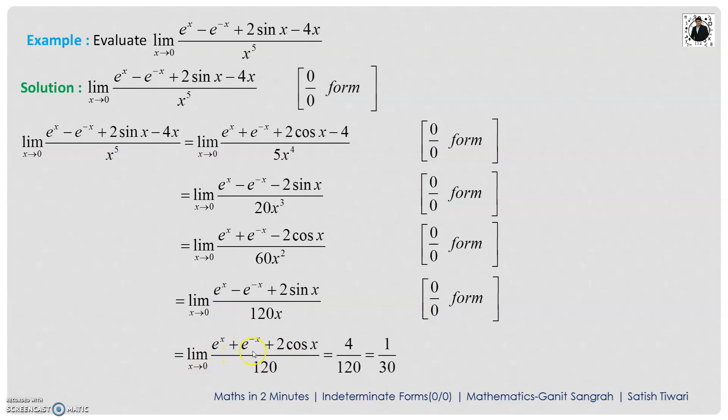Okay. If I put the 0 here, e to the power 0, 1, e to the power 0, 1. Cos 0 is what? It is 1. It is 4 by 120. Answer is what? 1 by 30. This way, we solve the examples on 0 by 0 form.